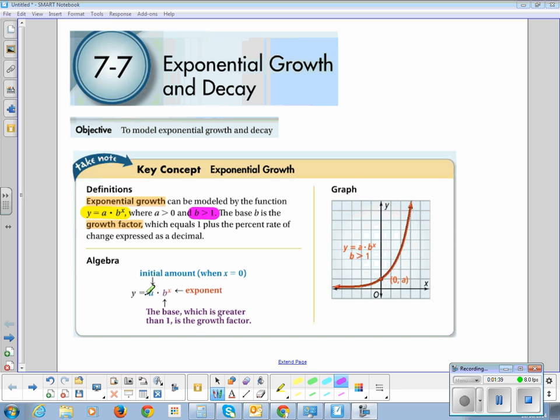The equation, and this is a very important part, Y equals A times B to the X, where A is your initial amount. It is what you have when X is equal to 0. Usually, that's when time is equal to 0, if we're talking population or money.